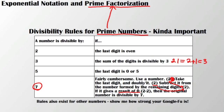I can also repeat this process for larger numbers. Divisibility rules also exist for other numbers like 4, 6, and 8 — you can go ahead and look those up. But right now I just want to focus on prime numbers.